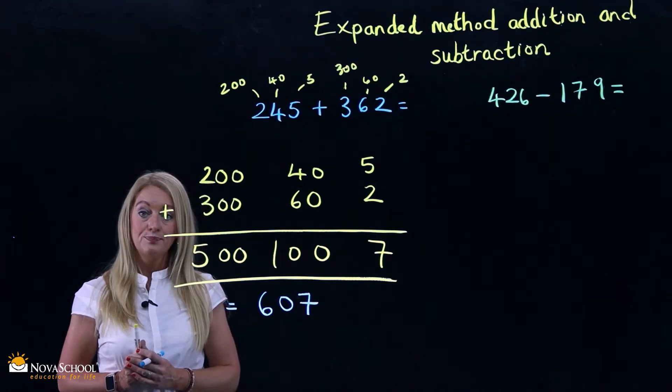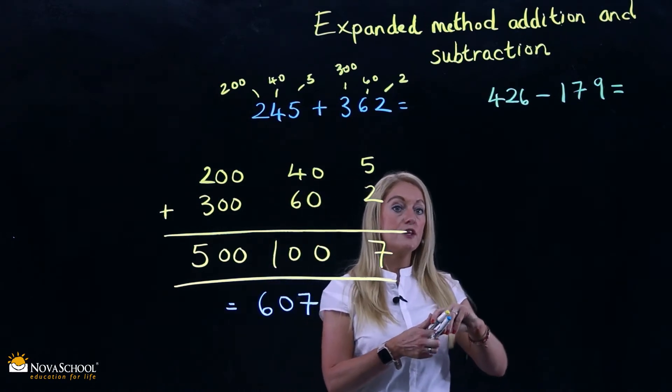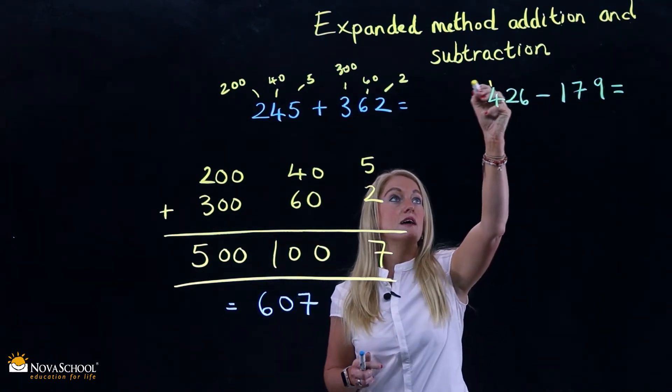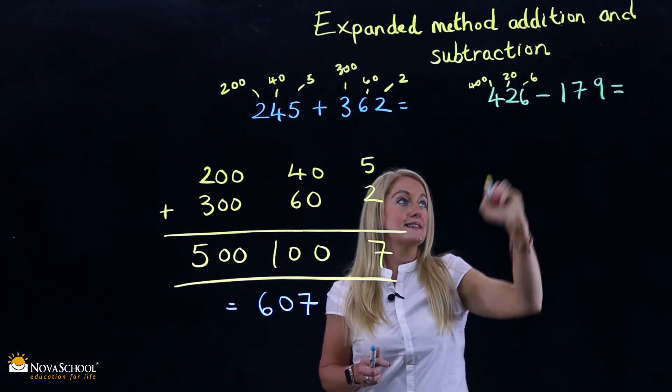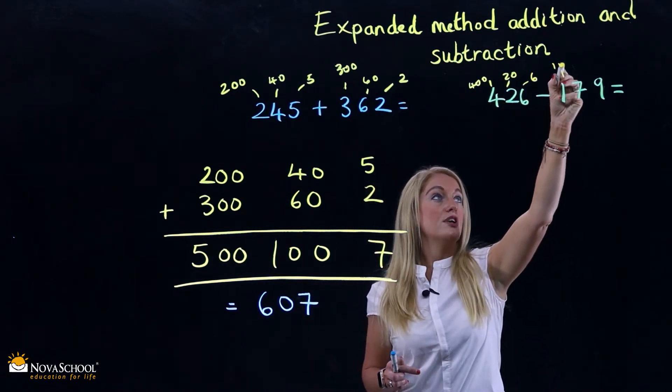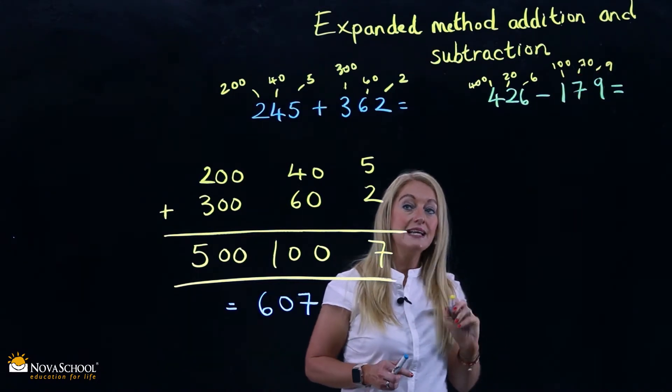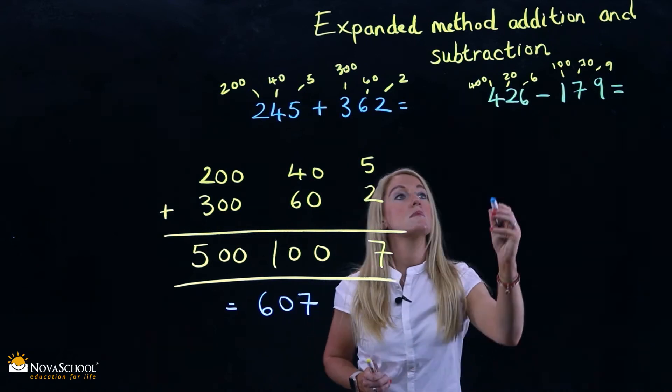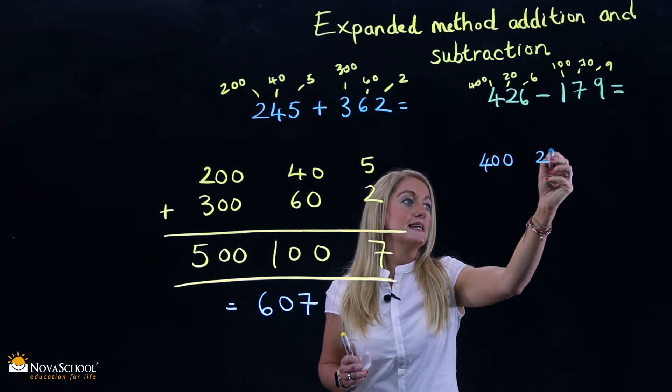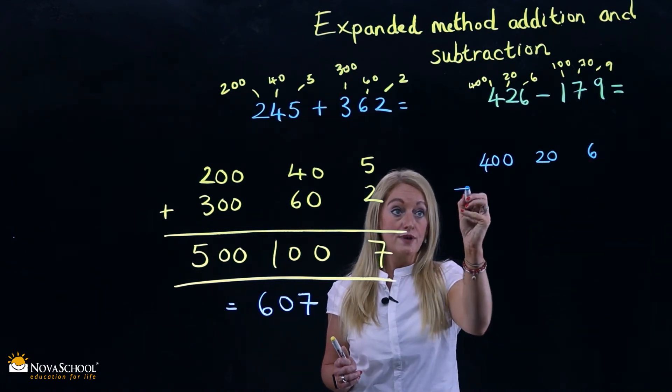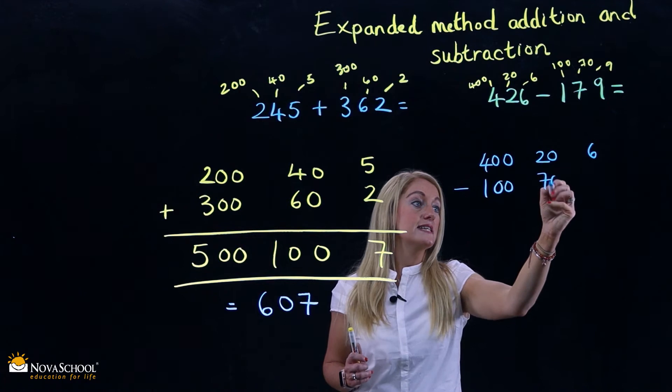Okay, now let's move on to the subtraction. So we partition the numbers in exactly the same way. 400, 20, and 6. And here we have 100, 70, and 9. Okay, let's write out the question. 426 subtract 179.